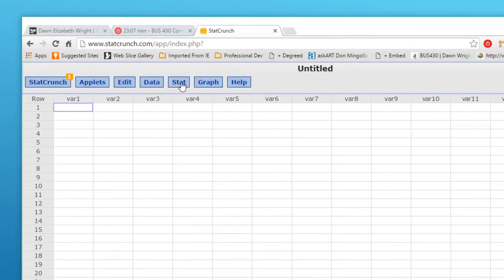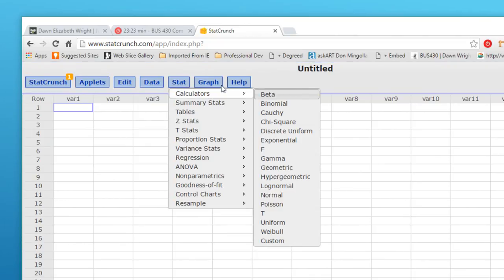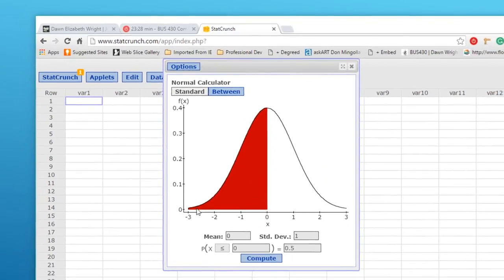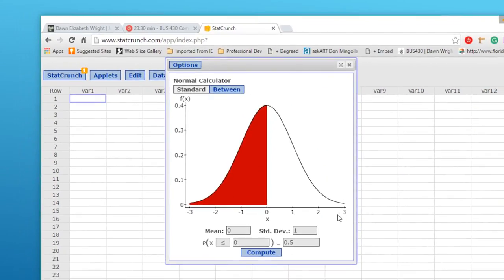I'm going to go to StatCrunch. What I did here—because I'm not in MyStatLab—I went to StatCrunch.com. All of you that have access to MyStatLab can get into StatCrunch using your MyStatLab credentials. We just go to Stat, Calculators, Normal Calculator, and we bring up our standard normal curve. Because we are using z values, we just leave the standard normal values of the mean of 0 and a standard deviation of 1.